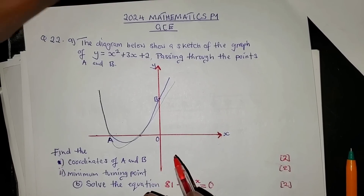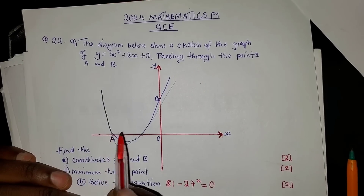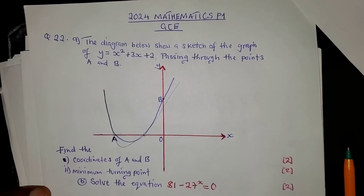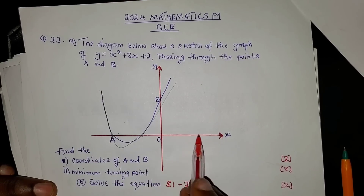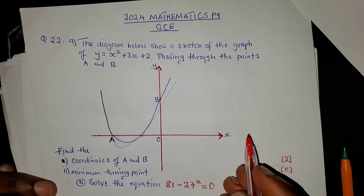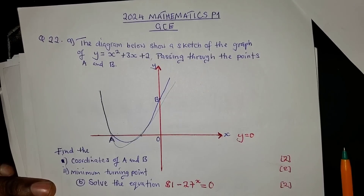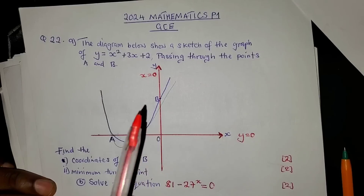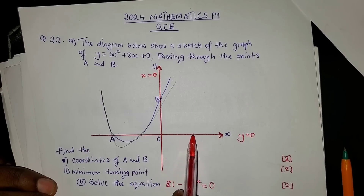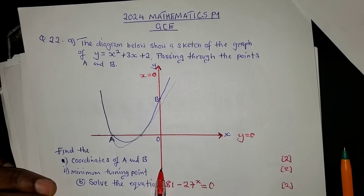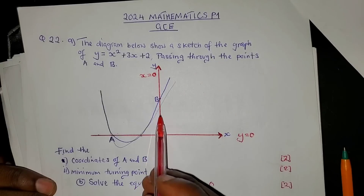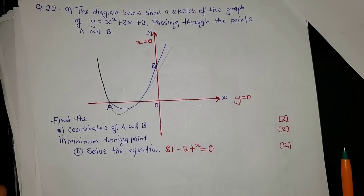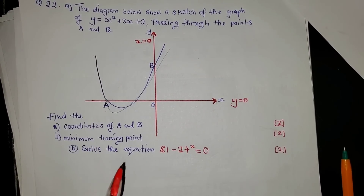The first question asks us to find the coordinates of A and B. Remember: on the x-axis, the value of y is zero. On the y-axis, the value of x is zero. So to find points on the x-axis, substitute y = 0 into the function.